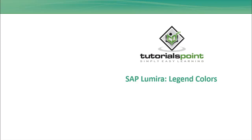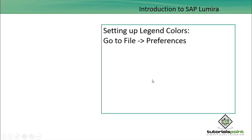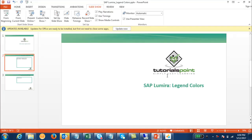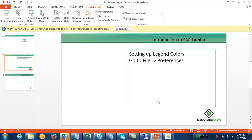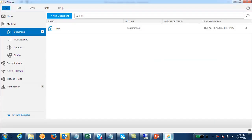Hello friends, welcome to Tutorials Point. In this tutorial we will discuss how we can set up the legend colors of charts in SAP Lumira. You can change the color of the charts in SAP Lumira by going to File and then Preferences, from where you can change the legend colors of the charts.